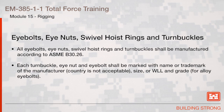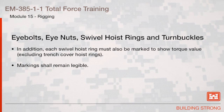All eye bolts, eye nuts, swivel hoist rings, and turnbuckles shall be manufactured according to ASME B30.26. Each turnbuckle, eye nut, and eye bolt shall be marked with the name or trademark of the manufacturer (country of origin is not acceptable), size or working load limit, and grade for alloy eye bolts. In addition, each swivel hoist ring must also be marked to show torque value, excluding trench cover hoist rings. Markings shall remain legible.